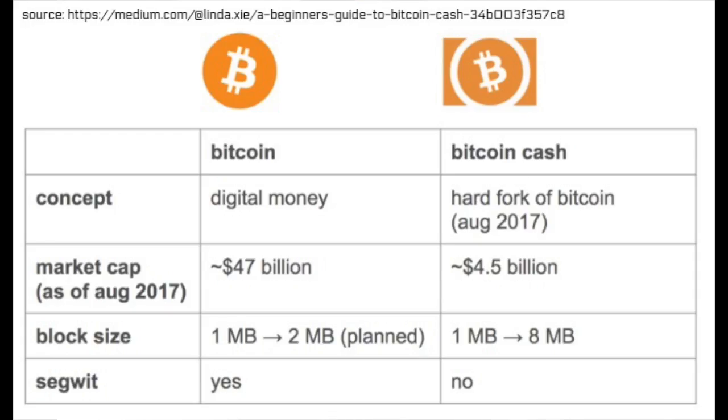With a one megabyte block size limit, the Bitcoin blockchain was handling about seven transactions per second. An increase in the usage on the Bitcoin blockchain meant that transactions took longer to get onto a block. Also, in order to get your transactions onto a block faster, that meant paying higher transaction fees to the miner. But not everyone wanted this upgrade, so a group of participants hard forked the Bitcoin blockchain on August 1st, 2017, and created Bitcoin Cash.